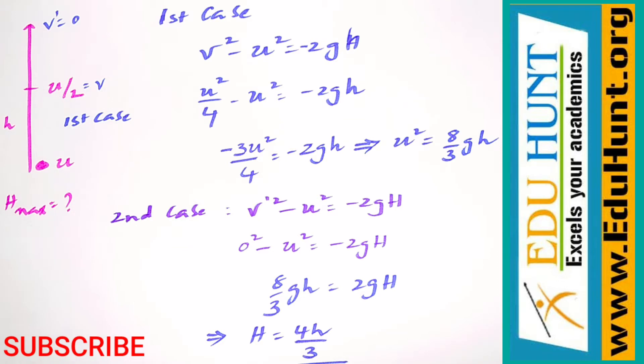In this problem, a body is thrown vertically upwards with some velocity that is not given. But at a height h, its velocity becomes half of the velocity with which it is thrown.